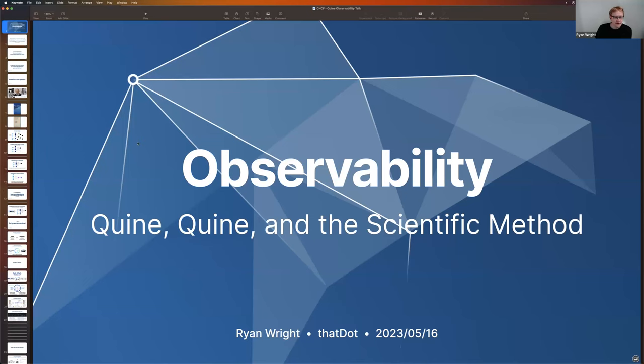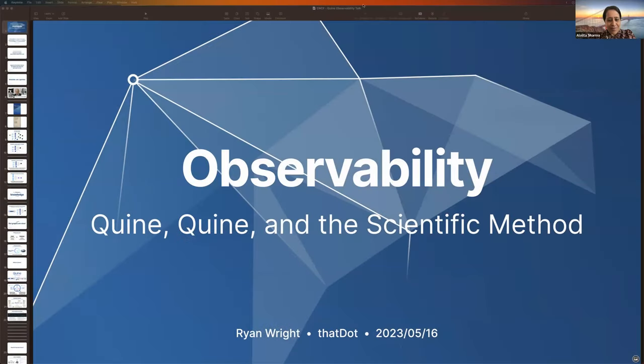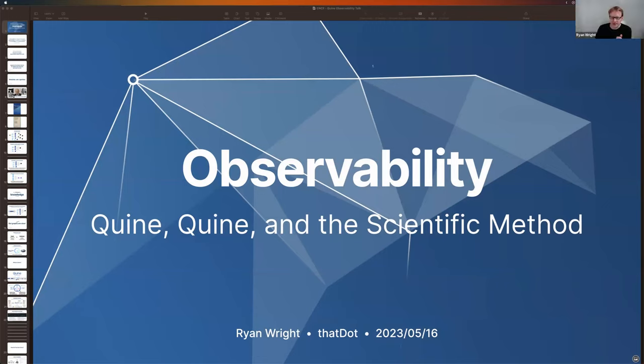All right, let me share my screen here. Hopefully you can see this okay? Yes, we can see it fine. And if I put the zoom window up here, you can't see the zoom window, right? So I can still see everybody, but you can't see the zoom window. It's looking fine. Only your presentation shows up. Okay, great.